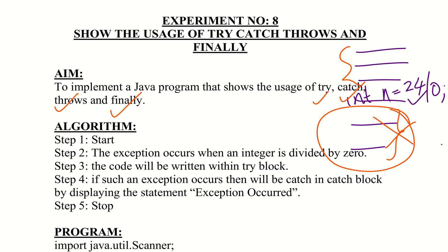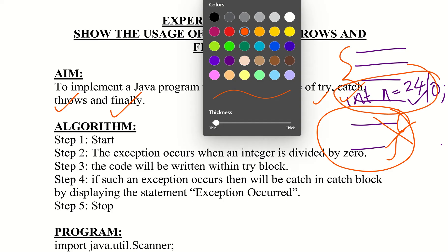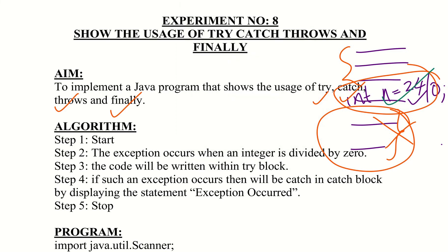We write the exception-generating code inside the try block. The code that may generate an exception is placed within the try block. If an exception occurs in the try block, it is caught in the catch block.